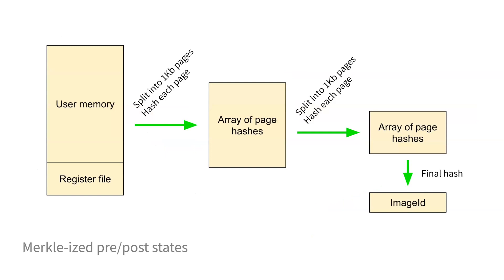That Merkle tree is made up of all of the hashes of pages in memory. We borrowed some operating system technology where they have this concept of a page — if you take all your memory and split it up into chunks, you call it a page. One kilobyte is the size we're currently using. Then we can hash that page, and that becomes an entry in the page table.